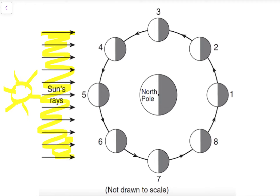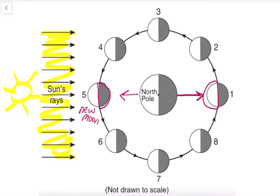So if the sun is on the left side of the diagram, in which position would you find a new moon phase? Remember, a new moon is when the portion of the moon facing the earth is totally dark — that would be what we see here at position five. This would be our new moon phase. Where in this diagram would we see a full moon? Remember, a full moon is when the portion of the moon facing the earth is totally lit up. That looks like what we see here — position one here would be a full moon.